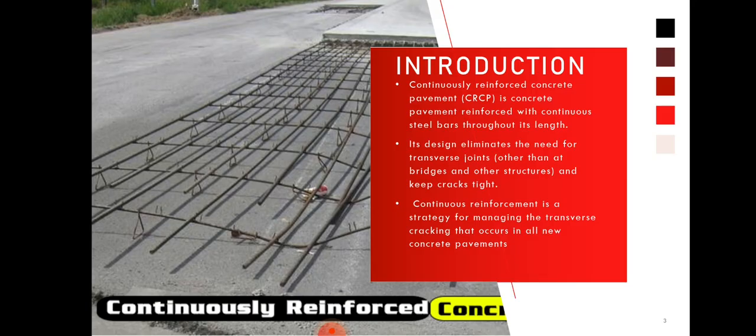Let's start with a brief introduction of CRCP — that is, continuously reinforced concrete pavement. As you know, transport is a vital infrastructure for rapid economic growth of the country. Nowadays about 60% of freight and 80% of the passenger transport is made by road transport in India, which demonstrates the need for a good road network. CRCP eliminates the need for transverse joints other than at bridges and other structures, and keeps the cracks tight, resulting in a continuous smooth riding surface that is virtually maintenance-free. The continuous reinforcement is a strategy for managing the transverse cracking that occurs in all new concrete pavement.